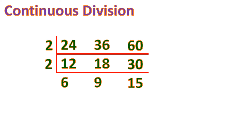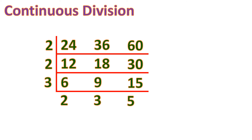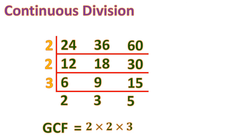Now 6, 9, and 15 are still divisible by a common number, which is 3. So we divide by 3: 6 ÷ 3 = 2, 9 ÷ 3 = 3, and 15 ÷ 3 = 5. We now have 2, 3, and 5, which are prime numbers with no common divisor. We multiply all the divisors on the left: 2 times 2 times 3 equals 12. That is the greatest common factor.